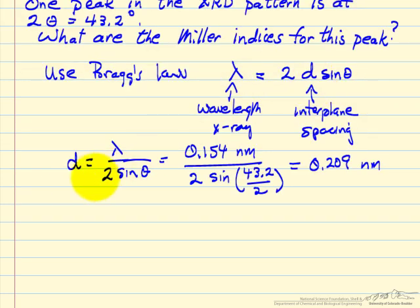I've rearranged this equation to solve for d: λ over 2sinθ. We're given the x-ray wavelength and 2θ, so θ is 43.2 divided by 2. We calculate that the d-spacing between these crystal planes that result in this x-ray peak is 0.209 nm.